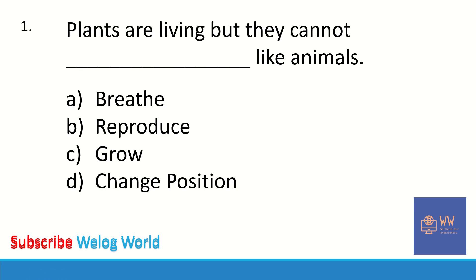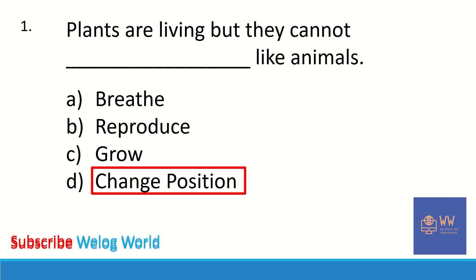First question: plants are living but they cannot dash like animals. Options are breathe, reproduce, grow, or change position. The answer is change position — plants are living but they cannot change position like animals.